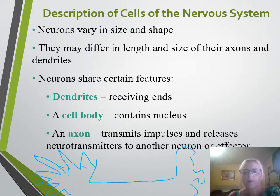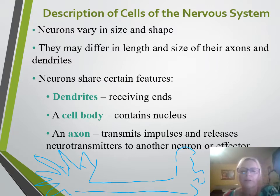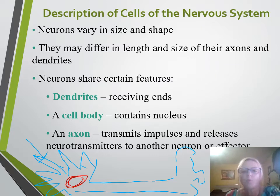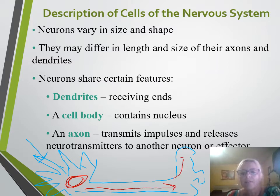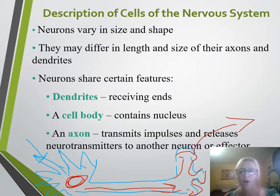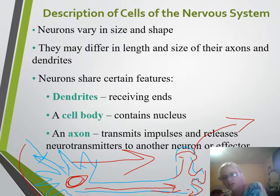Here is a basic nerve diagram. These here are the dendrites. Here in the middle we have the nucleus, so this is the cell body — sometimes referred to as the soma. And then this is the axon. These at the end can release neurotransmitters into the synaptic cleft, or continue to send the signal onto the next neuron. Information travels one way: received at the dendrite and traveling one way down the axon.